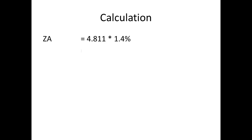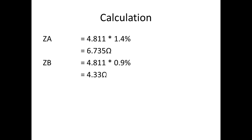Now finding ZA: substituting Z_base into its percentage, I got ZA equal to 6.735 ohms. For ZB I got 4.33 ohms, and for ZC I got 3.608 ohms.